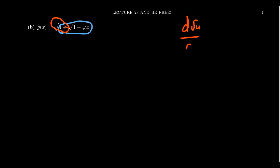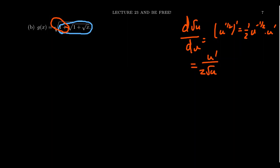Let's take the function g(x) = √(1 + √(1 + √x)). How many links are in this chain? Consider the inner function 1 + √(1 + √x) — seems complicated, but we don't have to do all links at once. For the outermost function, just take the square root of x. By the power rule, the derivative of √u with respect to u is (1/2)u^(−1/2), and by the chain rule we also multiply by u′ with respect to x. So the derivative of a square root function is u′ over 2√u. That will be helpful here.